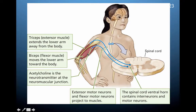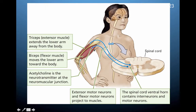Acetylcholine is the neurotransmitter at the neuromuscular junction, and it is involved in both of these muscle types. When you want to move the arm away from the body, the tricep is activated, moving it away. If you want to move the arm toward the body, instructions are sent to the motor neurons that connect with the bicep flexor muscle to move the arm toward the body.